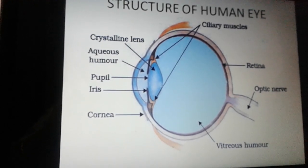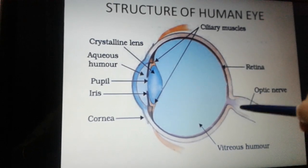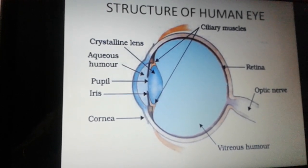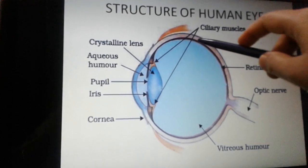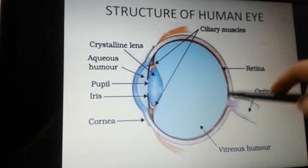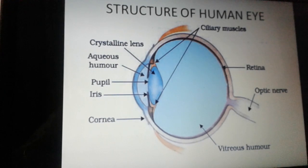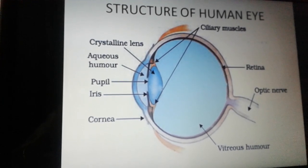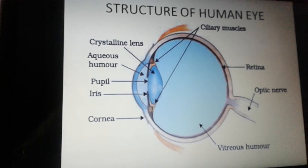One more point not in the NCERT but included in the structure of the eye is the blind spot. At the point where all the nerve cells leave the eye and enter the brain, there is a junction point. If any ray of light meets at that particular point, no image is formed. The blind spot is a very small point where any light that falls on it is not identified and no signal is transferred.